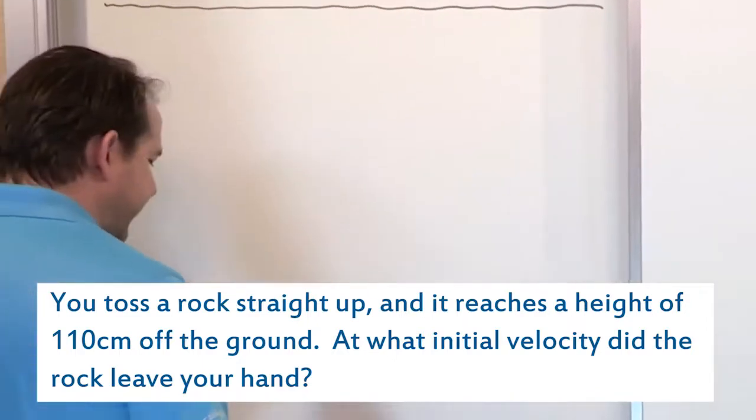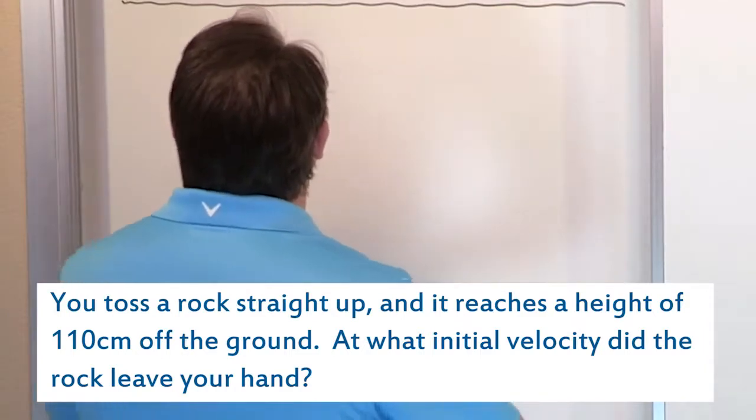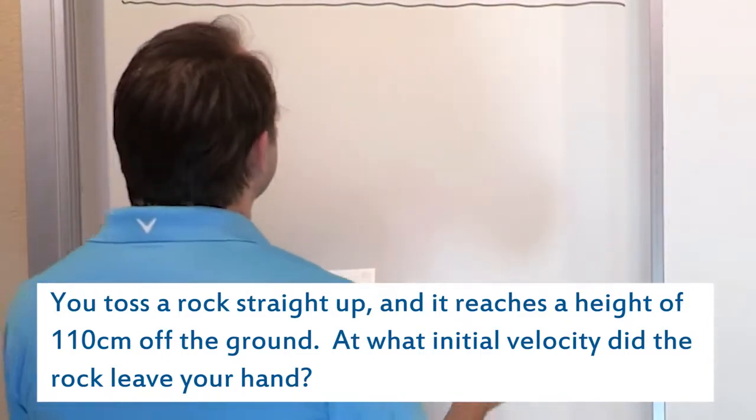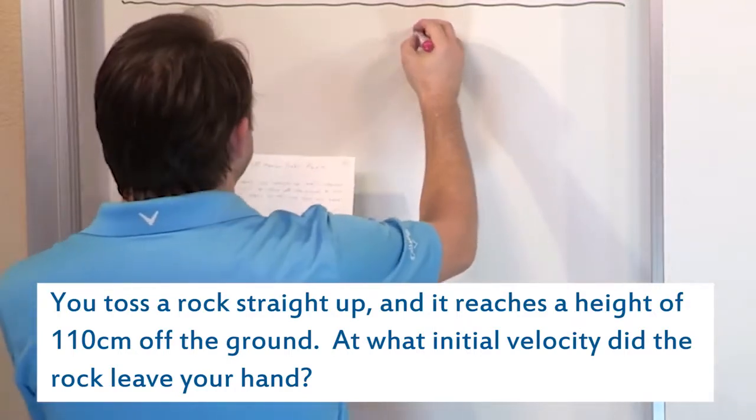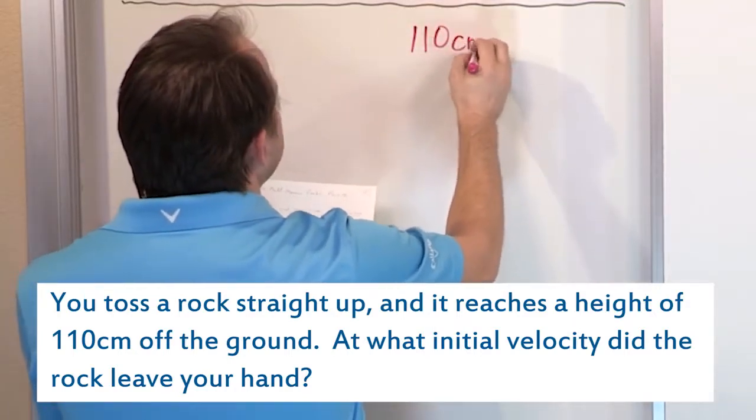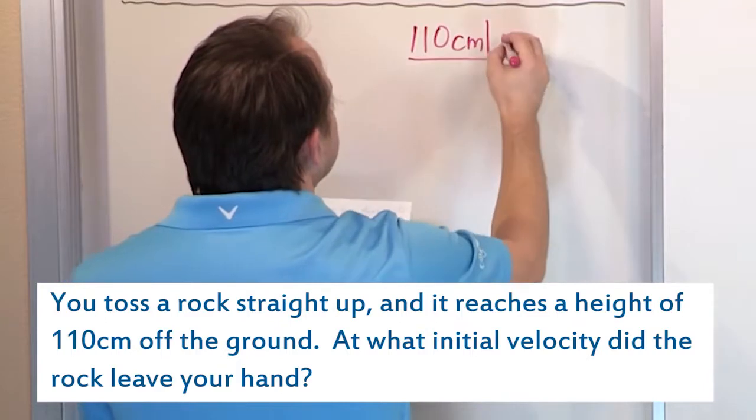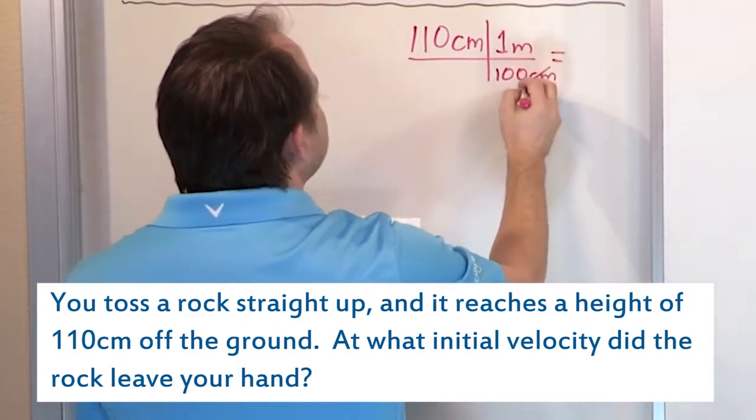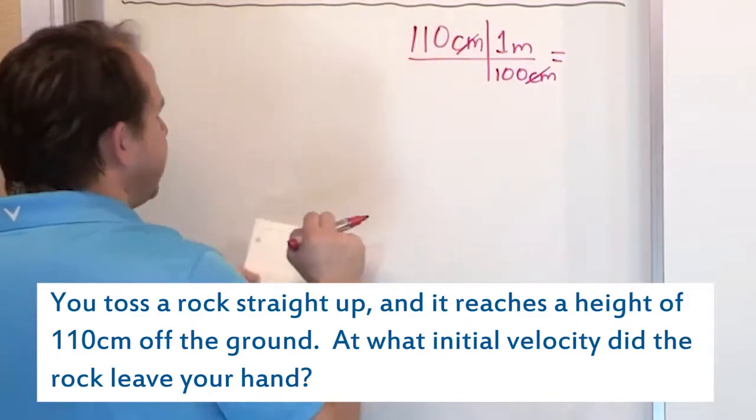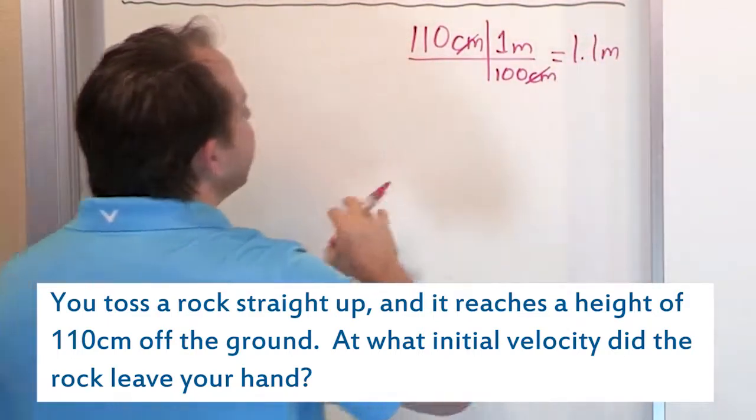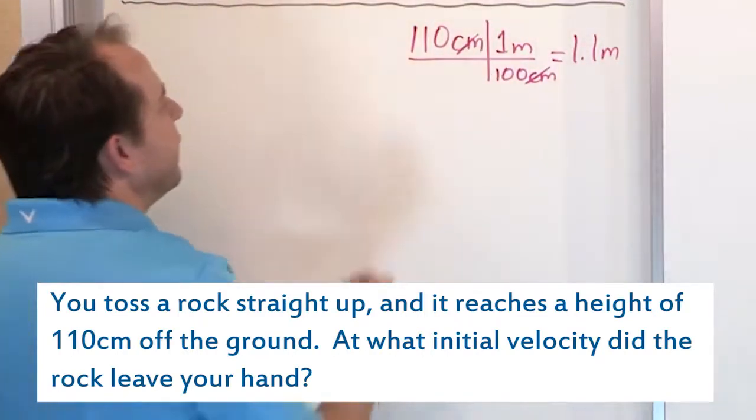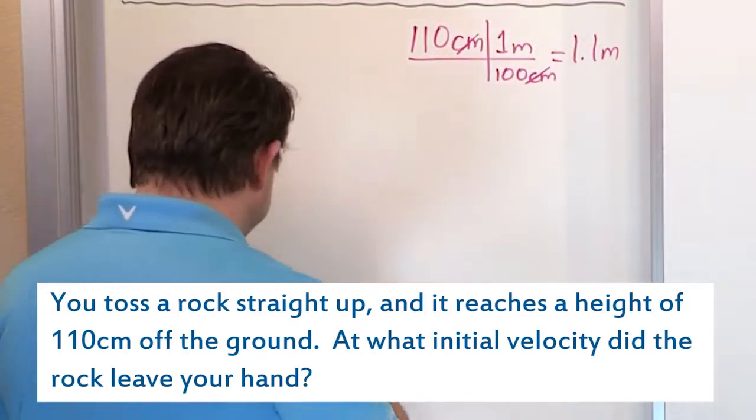So several things I want to talk about here, but the first thing is you should have a major aversion to seeing things like centimeter in your problem. It's not going to work, so we want to convert centimeters, 110 centimeters, into meters. And so we know that one meter is 100 centimeters. So when you cancel this, you take 110, you divide by 100, you're going to get 1.1 meters. So from here on out, we're not going to use 110 centimeters. We're going to say that the rock makes it to a height of 1.1 meters into the air.